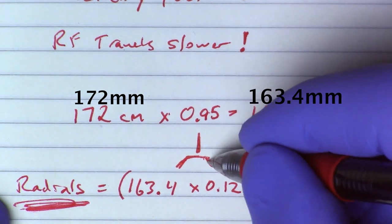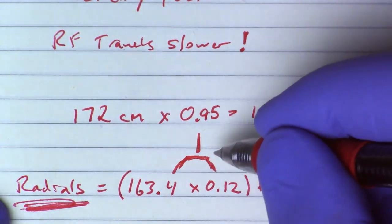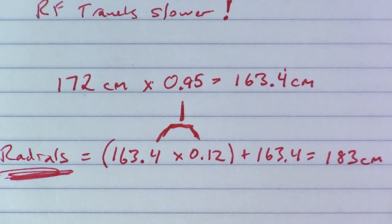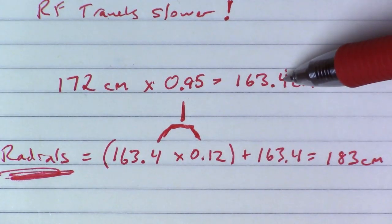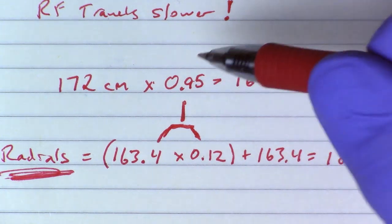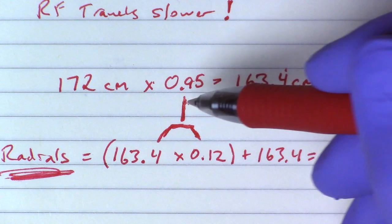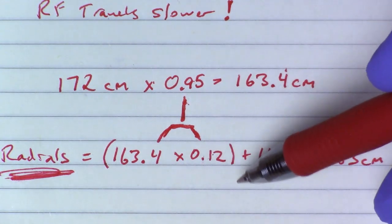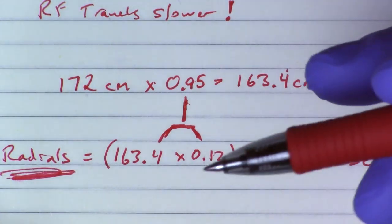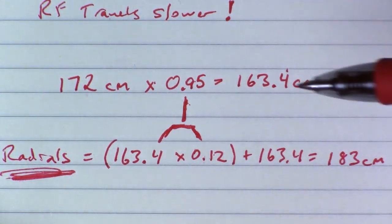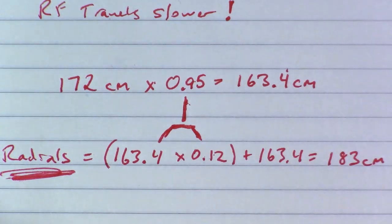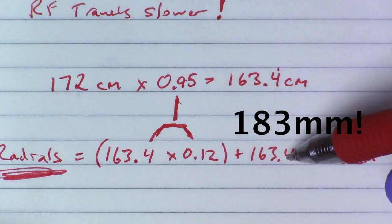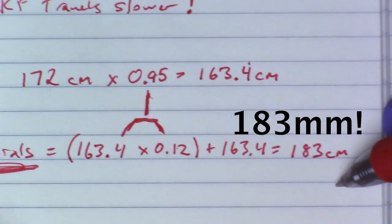Now our radials. This is my antenna. Isn't she a beaut? Our radials are going to be the same as this radiating element here multiplied by a 12% increase in length. Now that comes from the textbook. I don't know if that's historically like found empirically or what, but I'm going to stick to the rules on this one and just say 12% plus what we already calculated, added back to that is 183 centimeters.